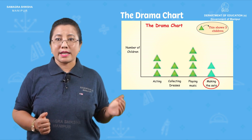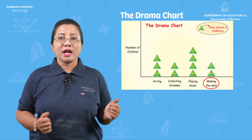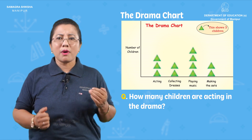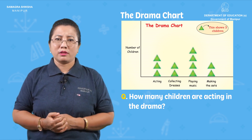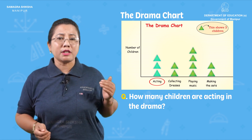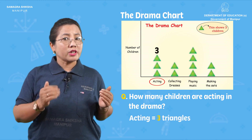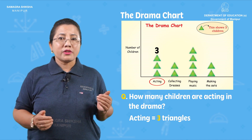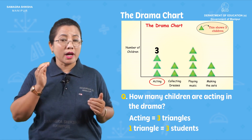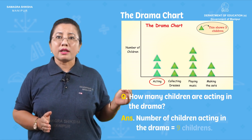Then for making the sets, how many triangles are there? Two triangles. Now, how many children are acting in the drama? If there are three triangles for acting, that means three into three, which is nine children.